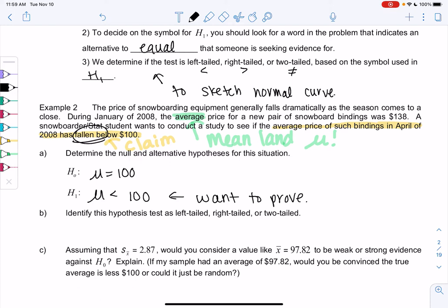Since this is a less than, is it left-tailed, right-tailed, or two-tailed? This would be left-tailed. When we do get into drawing the normal curve a little bit later, it just means we're going to be looking at the left side for less than.